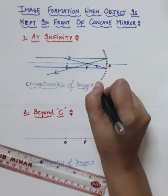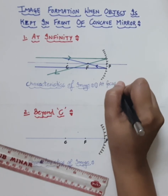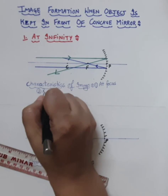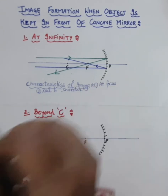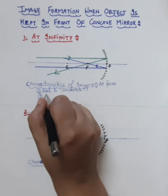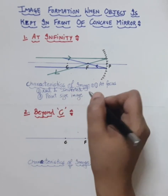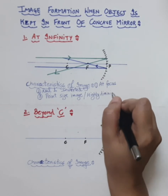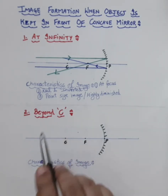The characteristics for this case: first, the position of the image is at focus. Second, the image is real and inverted, formed by real intersection of the rays. Third, the size — it is a point-size image formed at focus, which we can also describe as highly diminished.